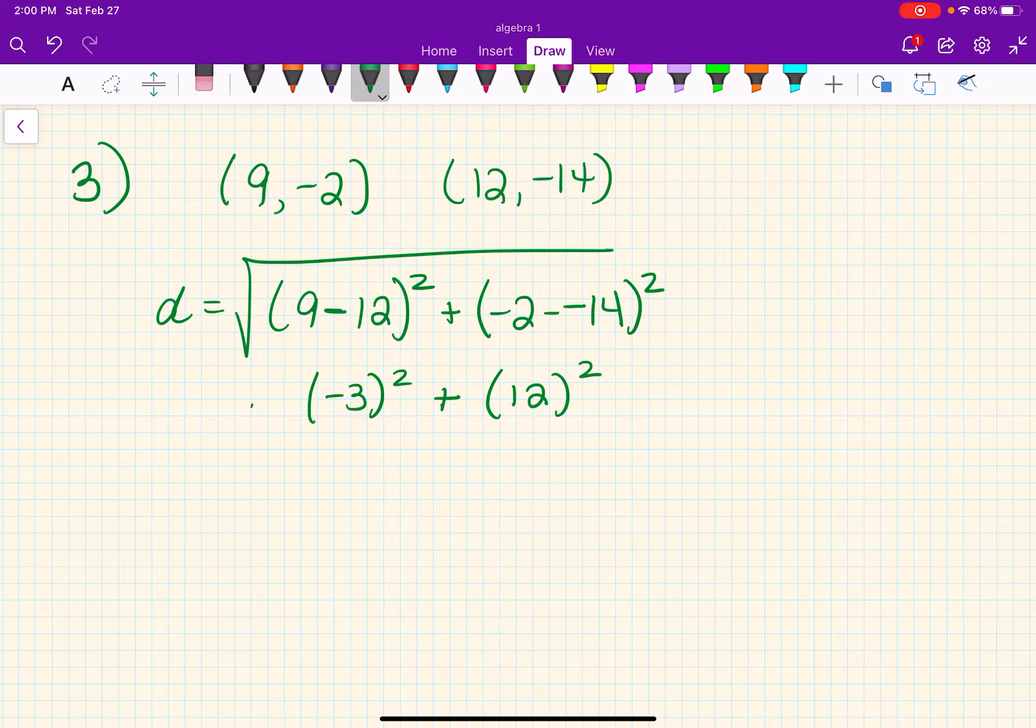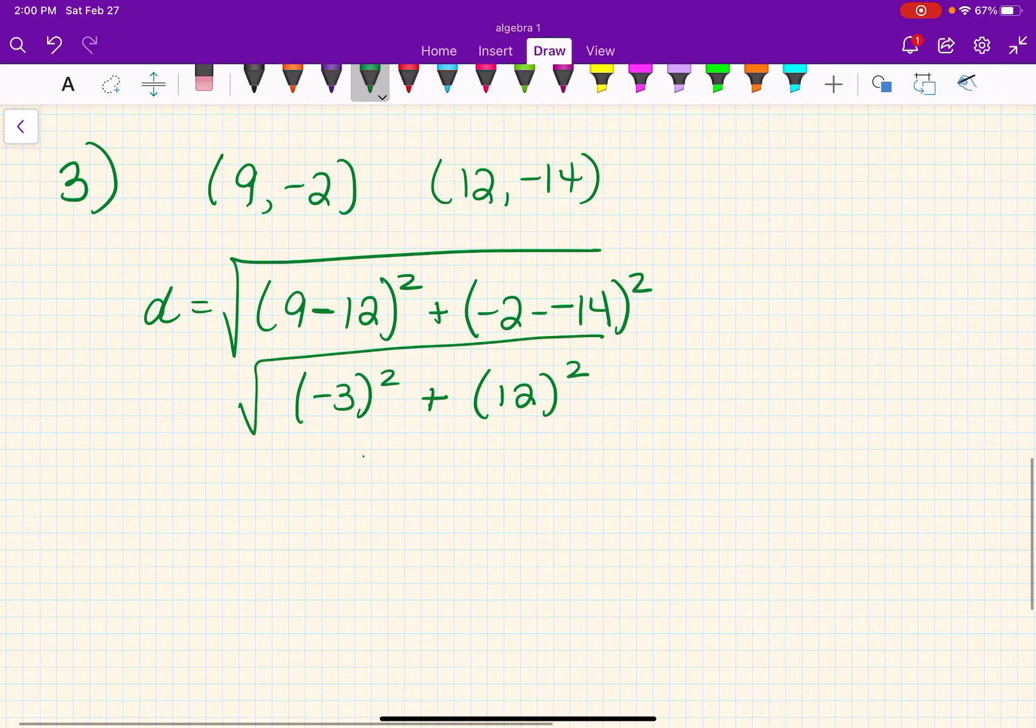So that's going to give you negative 3 squared plus negative or positive 12 squared. Now make sure that you put parentheses when you put this into your calculators. Because negative 3 squared in your calculator is going to give you negative 9. The calculator doesn't know, unless you put the parentheses around it, that you want the negative squared as well.